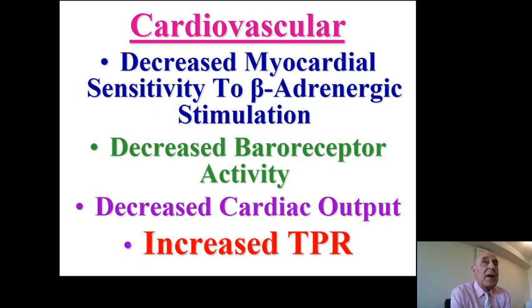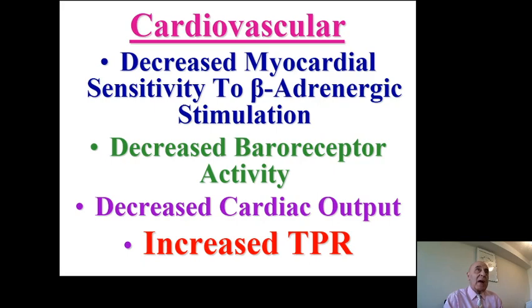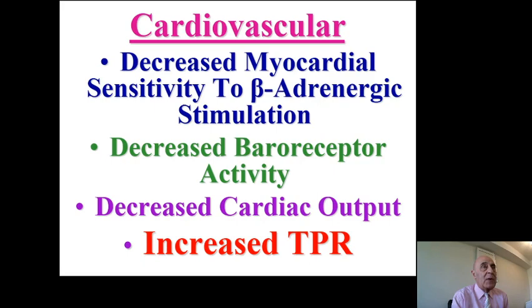In the cardiovascular system, there is a decrease in myocardial sensitivity to beta-adrenergic stimulation and a decrease in baroreceptor activity. Cardiac output is expected to decrease, while total peripheral resistance will increase, meaning more vasoconstriction in peripheral blood vessels. This is one of the causes of elevated blood pressure in some elderly people.